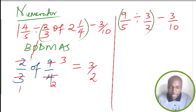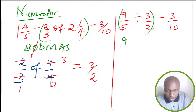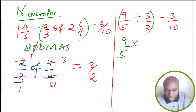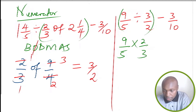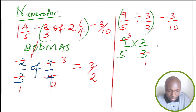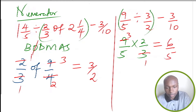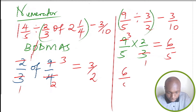I'm using brackets to indicate what we should start with. So 9 over 5 divided by 3 over 2: we change the division sign to multiplication and take the reciprocal of 3 over 2, which is 2 thirds. Then we simplify: 3 divided by 3 is 1, 9 divided by 3 is 3. This gives 6 over 5. So 9 over 5 divided by 3 over 2 equals 6 over 5.